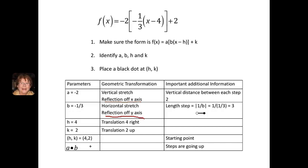Then ignore the negatives for a moment. If we look at the value two — two is a number greater than one — that means there's a vertical stretch. Ignore the negative on one-third: one-third is a number between zero and one, which means there's a horizontal stretch. Be careful with those parameters when a and b are negative.